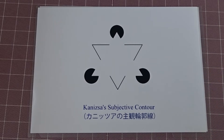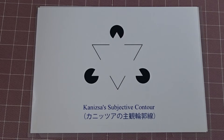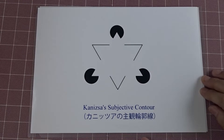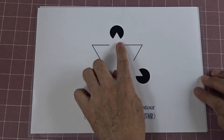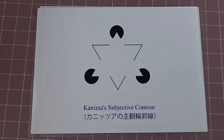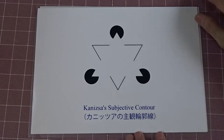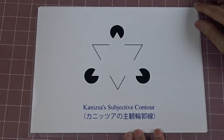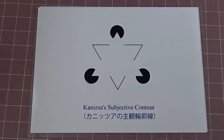The first example is Kanizsa's subjective contour. When we see these pictures, we feel that there is a white triangle in front of other figures. Although the white triangle is not actually drawn, we feel that there are some contour lines here. This line is called the subjective contour.